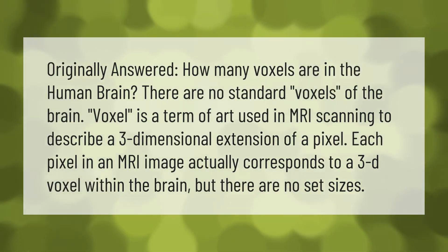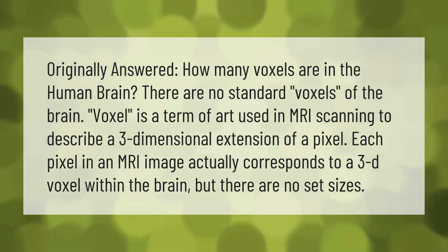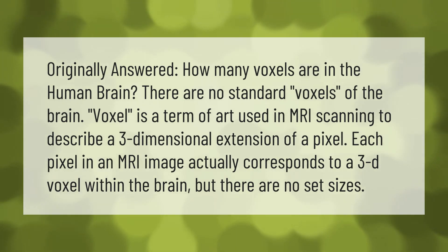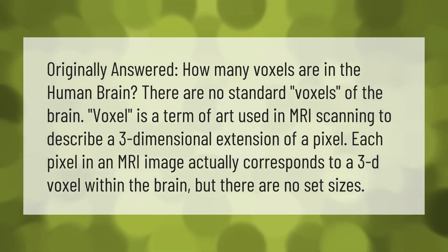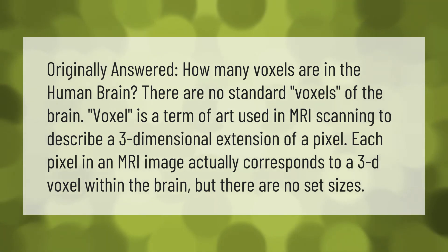How many voxels are in the human brain? There are no standard voxels of the brain. Voxel is a term of art used in MRI scanning to describe a three-dimensional extension of a pixel. Each pixel in an MRI image actually corresponds to a 3D voxel within the brain, but there are no set sizes.